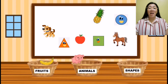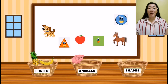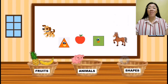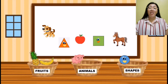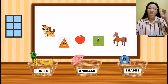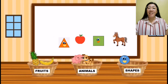Next is a pineapple, and pineapple is a fruit, so we will put that pineapple inside the fruit basket. The next picture is a circle, and circle is a shape, so we will put the circle inside the shapes basket. The next picture is a dog, and a dog is an animal, so we will put the dog inside the animal's basket.